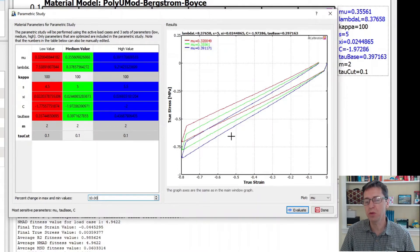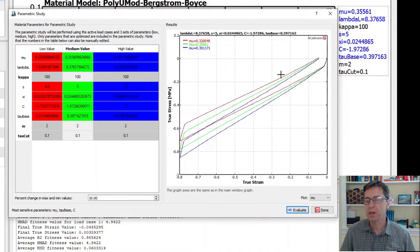So we'll see that the mu parameter has a very large influence on the response. It doesn't really change the initial slope very much but it does change the slope towards larger strains. So this is a very important parameter for this specific material model.